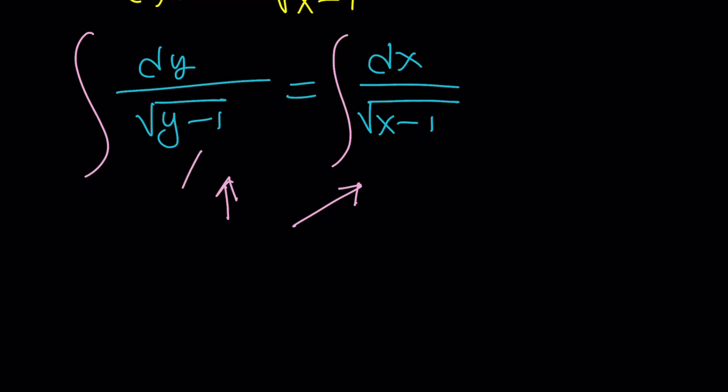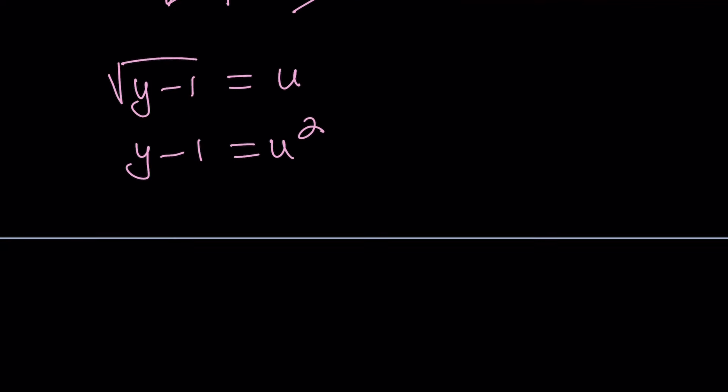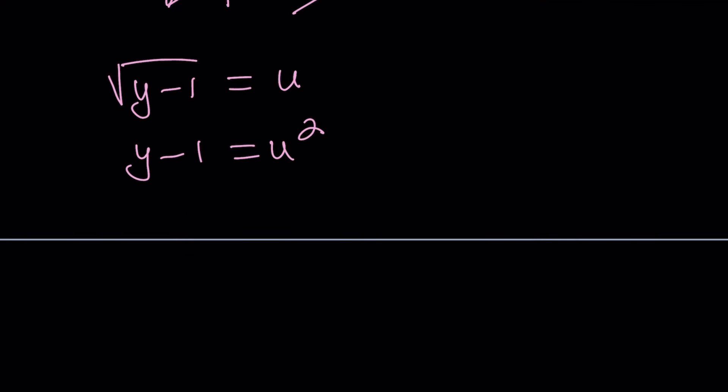Now, when you integrate something like this, let's just do this, and we can plug in the x. Okay, so to solve a problem like this, I'm going to use u substitution. I'm not going to use u, I'm going to use u substitute. So, let's set this equal to u. Square root of y minus 1 equals u. That implies that y minus 1 is equal to u squared. Square both sides, obviously.